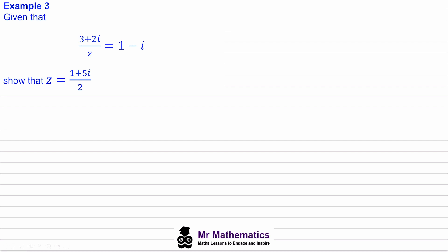In example three we've been given 3 plus 2i divided by z equals 1 minus i, and we've been asked to show that z equals 1 plus 5i over 2. You may want to pause the video and try this yourself before we go through the worked solution.